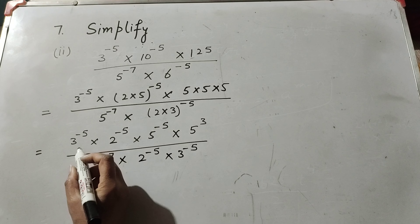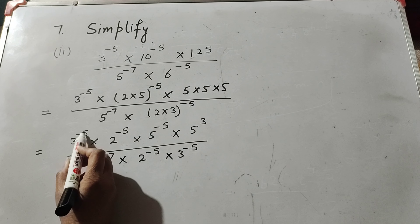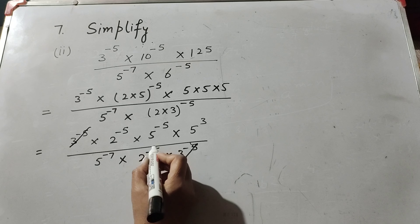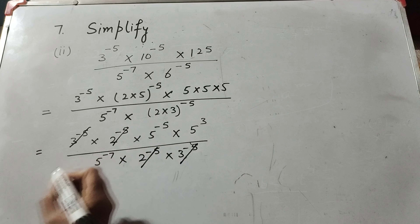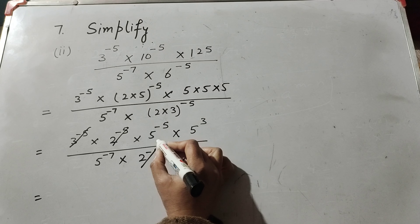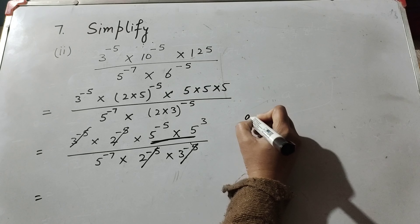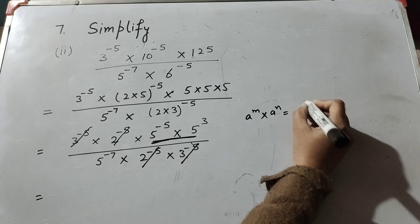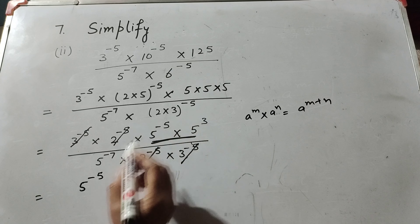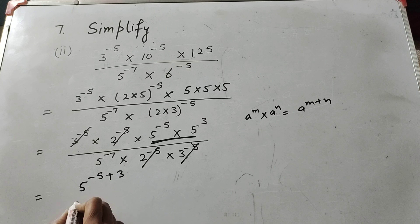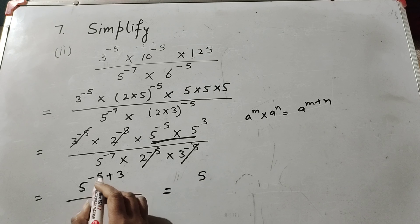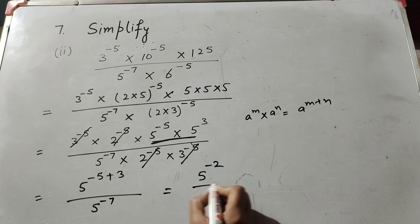3 raised to power minus 5 in the numerator and 3 raised to power minus 5 in the denominator are both cancelled, giving 1. And 2 raised to power minus 5 in the numerator and 2 raised to power minus 5 in the denominator are cancelled, giving 1. Now we get 5 raised to power minus 5 into 5 raised to power 3 over 5 raised to power minus 7. For the numerator term, we use the law of exponent: a raised to power m into a raised to power n equals a raised to power m plus n. So it is equal to 5 raised to power minus 5 plus 3 over 5 raised to power minus 7, which is 5 raised to power minus 2 over 5 raised to power minus 7.